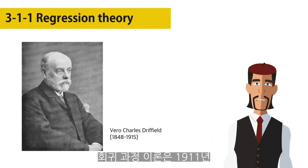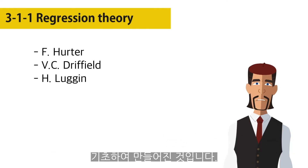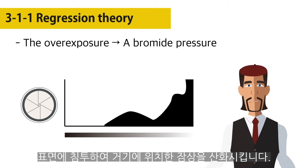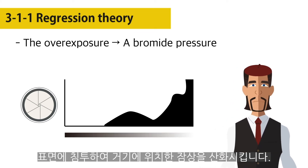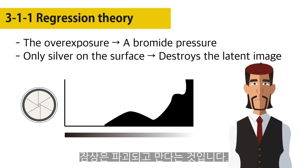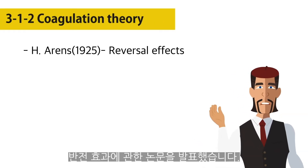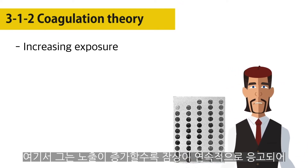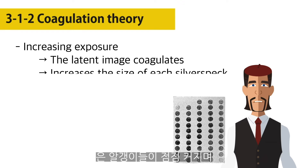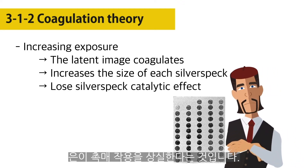The regression process theory was formulated by H. Luppo Kramer in 1911, based on research by F. Herter, V. C. Driffield, and H. Luggan. The overexposure generates a bromide pressure that escapes from the internal sphere and permeates to the surface, where it oxidizes the latent image situated there, destroying it, because only silver on the surface can be developed. H. Ahrens published in 1925 a paper about reversal effects, concluding that solarization is based on the finding that under increasing exposure the latent image successively coagulates, increasing the size of each silver speck, causing the silver speck to lose its catalytic effect for development.